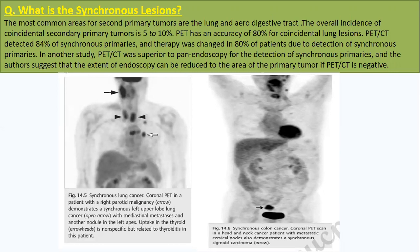In another study, PET-CT was superior to panendoscopy for detection of synchronous primaries, and others suggest that the extent of endoscopy can be reduced to the area of the primary tumor if the PET-CT is negative.